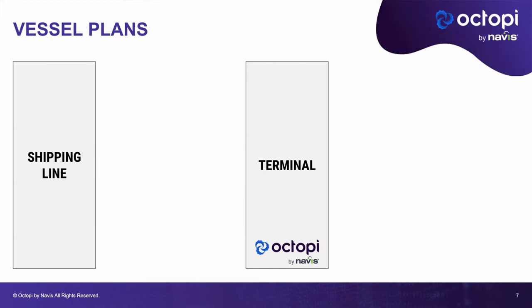There's another type of message exchanged between shipping lines and terminals: vessel plans. When a vessel is going to arrive, there is a lot of planning around where to put containers on the vessel. These are done via a file called a BAPLIE file, which is an EDIFACT standard. There is no equivalent to the BAPLIE in the ANSI-X12 standard, so even shipping lines using ANSI-X12 end up using the BAPLIE file for vessel plans. Before the vessel arrives, the shipping line sends an arrival vessel plan to the terminal — listing all containers on the vessel, their locations, weights, and additional information such as hazmat or dangerous goods. This file is typically generated by the previous port of call and forwarded by the line to the next terminal.